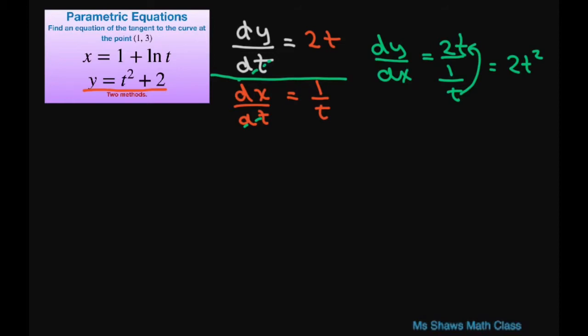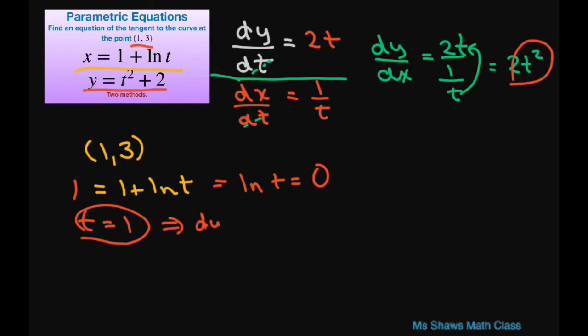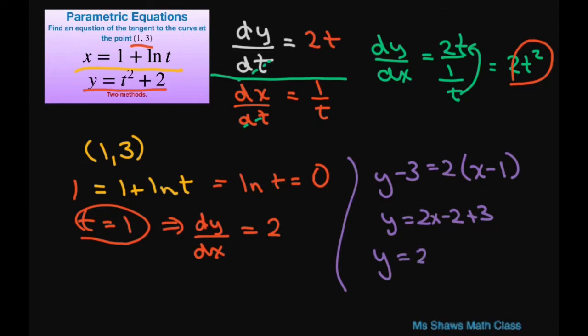So at our point (1,3), we have x equals 1 plus ln of t. So that means ln of t equals 0. Also, at t equals 1 for our x here, you substitute that back in here, our derivative of y with respect to x is just going to equal 2. So the equation of the line is going to be y minus 3 equals 2 times x minus 1. This gives you y equals 2x minus 2 plus 3, which gives you y equals 2x plus 1.